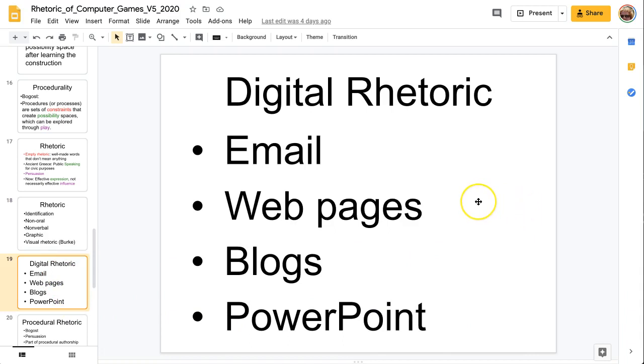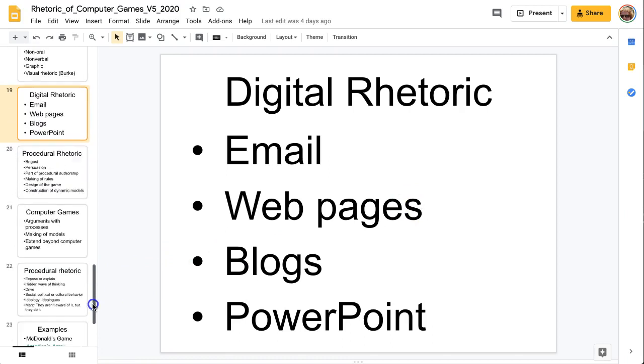Now we can have a digital rhetoric. There are certain kinds of rules about making email. You must put in a subject. The subject should be descriptive. And there is certain rhetoric for web pages. You must have HTML at the beginning and the end. And blogs and PowerPoint. All of these different software have rules about how to use them effectively.